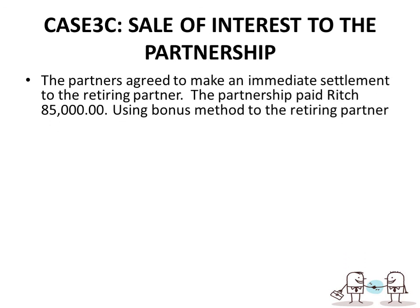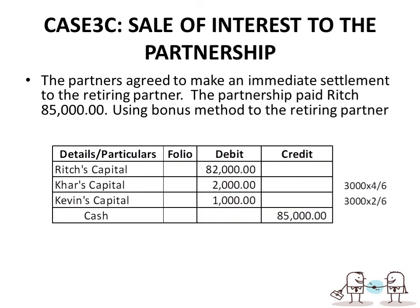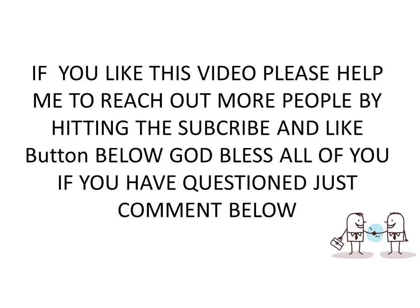Bonus method — bonus to the retiring partner: the partnership paid Rich $85,000. Entry: debit Rich's Capital $82,000, debit Carr's Capital $2,000, debit Kevin's Capital $1,000 (divided in their P&L ratio since the continuing partners are giving the retiring partner a bonus), credit Cash $85,000. Conversely, if the payment is less than book value, it results in a bonus to the remaining partners.